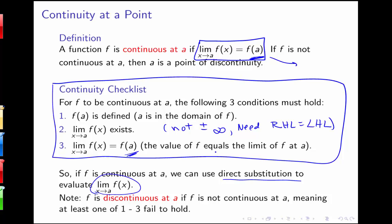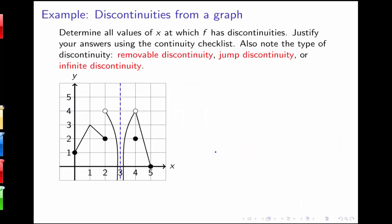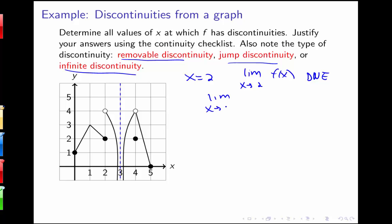Let's look at a graph to identify places where the function is not continuous and describe the type of discontinuity. The first discontinuity is at x equals 2. f(2) is defined — it equals 2 — but the limit as x goes to 2 doesn't exist, since the limit from the left is 2 while the limit from the right is 4. When the left and right limits are different like this, we call it a jump discontinuity.